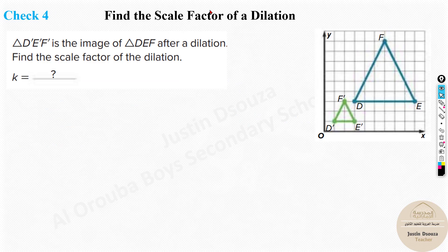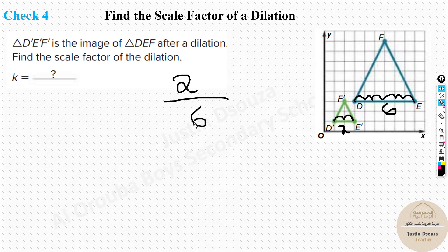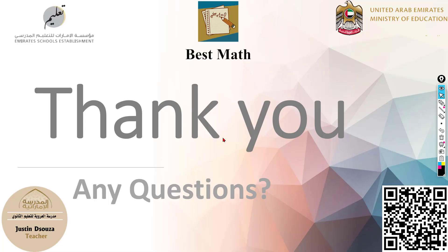For the check problem, there's a simpler way — the line is flat and straight, so just count the units on the coordinate plane. The dilated image measures 2 units and the original pre-image DEF measures 6 units. Scale factor = dilated ÷ original = 2 ÷ 6 = 1/3. Very simple — just count on the coordinate plane.